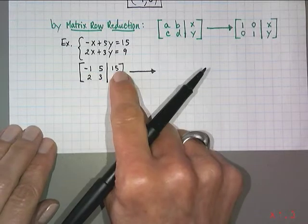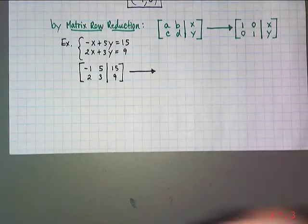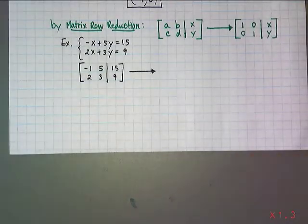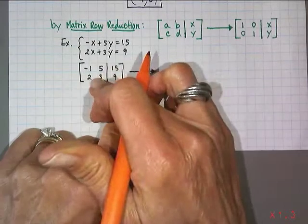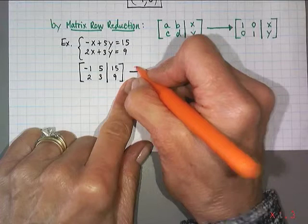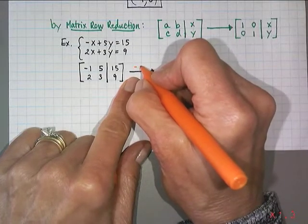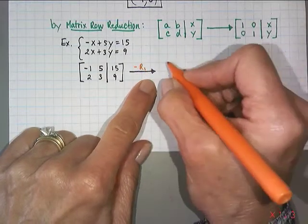So that's how I'm going to write on top of this arrow. I always give my instruction for what my plan is to change this matrix into the next one. So I'm going to multiply row one by negative one. I'm going to write the opposite of row one.